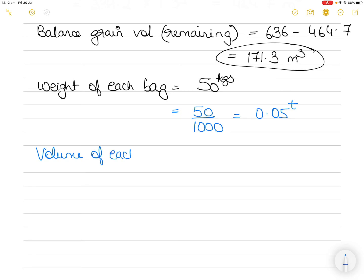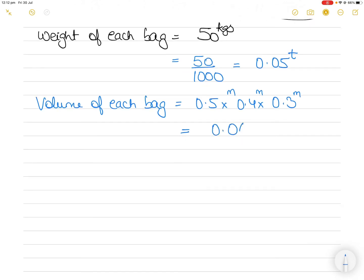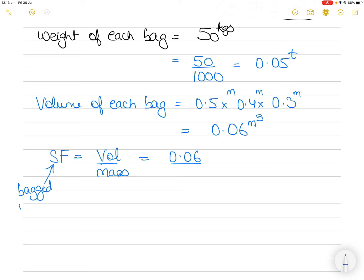Using the formula stowage factor equals volume divided by mass, the stowage factor of bagged maize is 0.06 divided by 0.05, which equals 1.2 cubic meters per ton. Note that 1.37 was the stowage factor for loose grain maize, and 1.2 is for bagged maize.